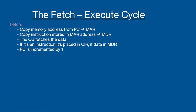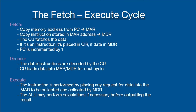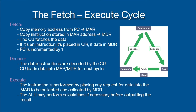The next stage of the cycle is the decode stage. The data or instructions are decoded by the control unit. After, the control unit loads the data into the MAR or the MDR for the next cycle. Lastly, we have the execute stage — this is where the instruction is performed. This diagram simply shows the fetch-execute cycle. We can see that registers are used to fetch data and instructions, the control unit deals with decoding, and the ALU is sometimes used in part of the execution.